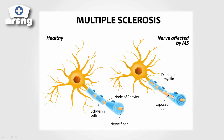Here's a neuron with healthy myelination, and this would be what happens with damaged myelin — where the myelin becomes damaged and it starts to expose the neuron.